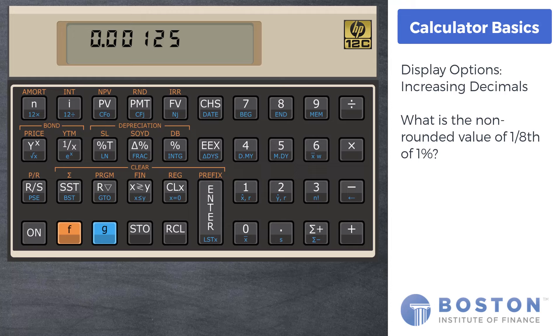To set the display back to two decimals, press the orange F key and then the 2 key. The display in this particular example still looks like three digits. Press the CLX key.